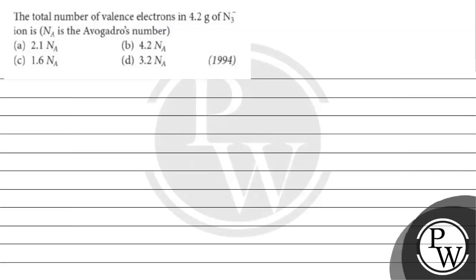Let's read this question: the total number of valence electrons in 4.2 grams of N₃⁻ (azide ion) is — option A: 2.1 × Avogadro's number, option B: 4.2 × Avogadro's number, option C: 1.6 × Avogadro's number, option D: 3.2 × Avogadro's number.